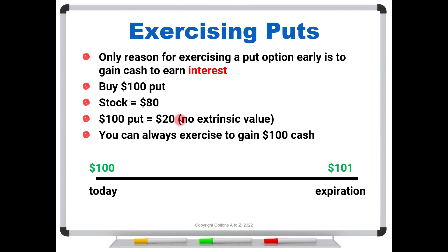So again, the only reason for exercising a put early is that it is super deep in the money, little to no extrinsic value, and you have to be earning some type of interest from your broker. If your broker is paying zero interest, or at least to where it's not going to amount to anything over the next 30 or 60 days, no reason in the world to exercise that put option early.